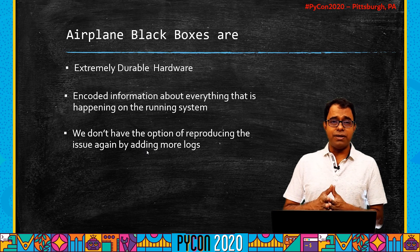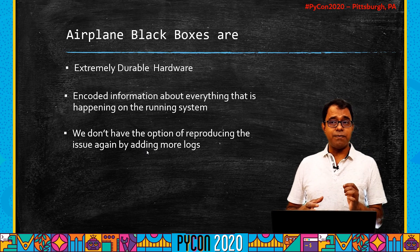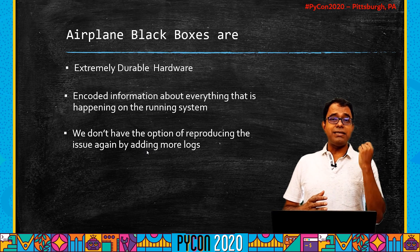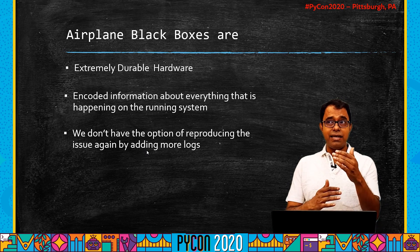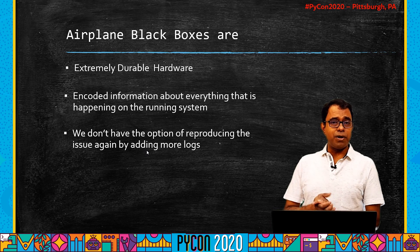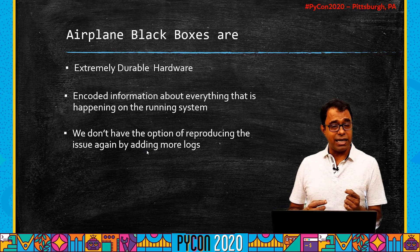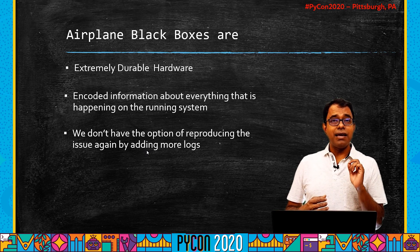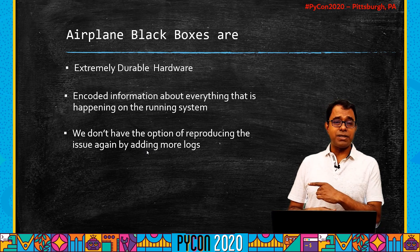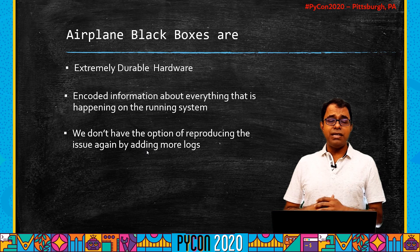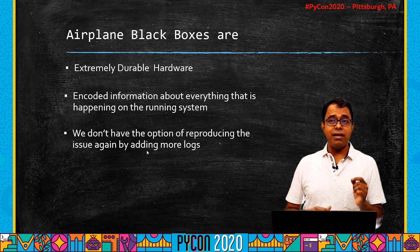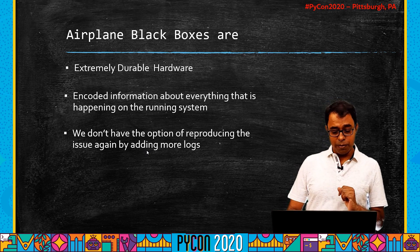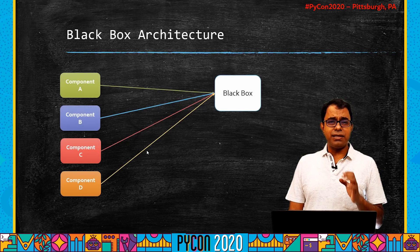In software, something often goes wrong in a production system and we try to find the root cause. We patch the production system with additional logs in the area we feel is the root cause, and we expect the problem to reoccur so we can get more information. That option is not there in an airplane. So in black box debugging we wanted to come up with something where we rarely need to patch the existing production system to find the root cause.